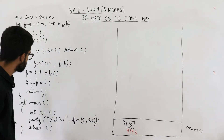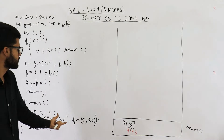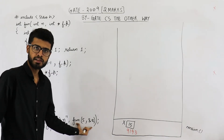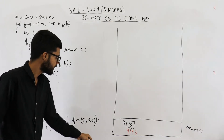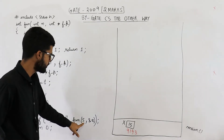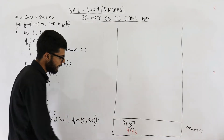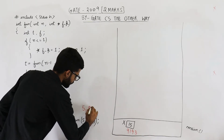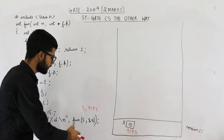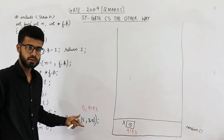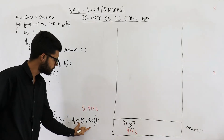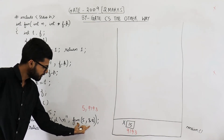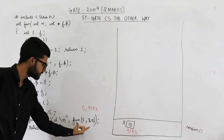The next line is: printf("%d\n", fun(5, &x)). Here you are calling the function fun. Whatever is returned by this function call will be printed. The first value passed is 5, and the second is &x — the address of variable x, which is 9193. So 5 and 9193 are passed. This function will execute completely and something will be returned, which is printed as an integer.